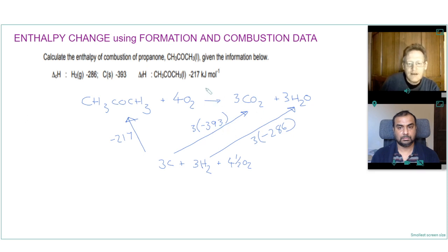And this is the enthalpy change of combustion that we're trying to calculate. So seeing as we're going from left to right, then we're going against the propanone arrow and with the carbon dioxide arrows. So if we're going that way, and if we're going against the arrow it's the opposite reaction so we change the sign. So our enthalpy of combustion here will equal plus 217.